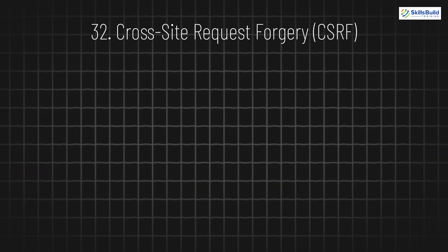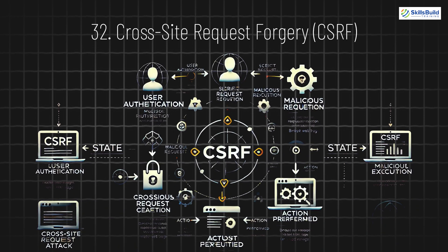32. Cross-Site Request Forgery (CSRF). CSRF tricks users into unknowingly performing actions on websites they are logged into. For example, hackers can make users transfer money or change account settings without their consent by sending a disguised malicious request.